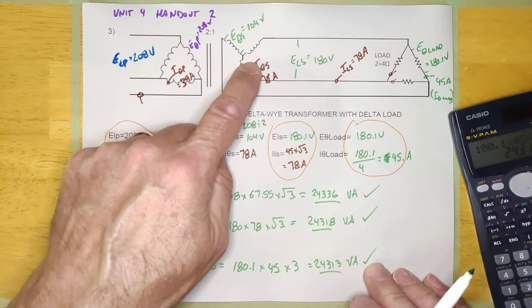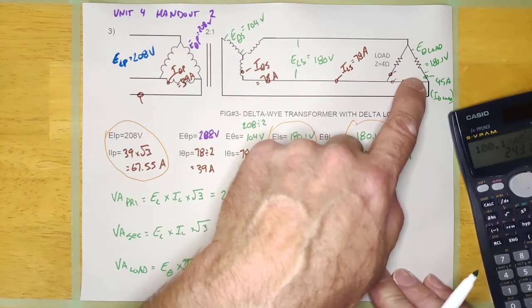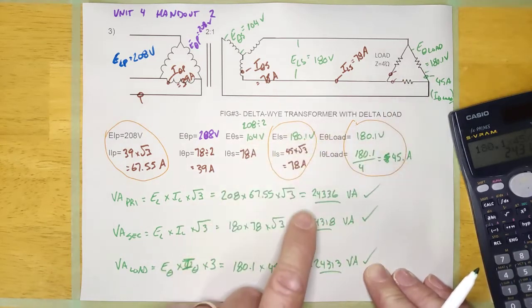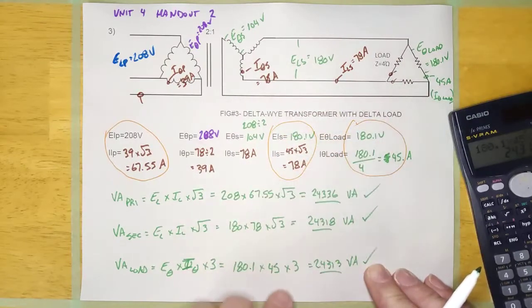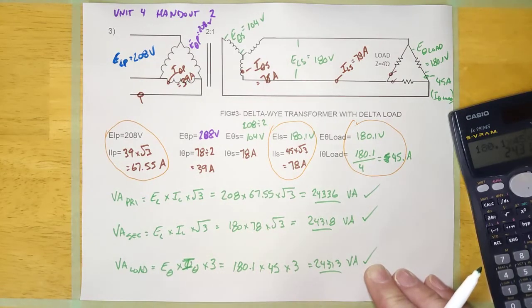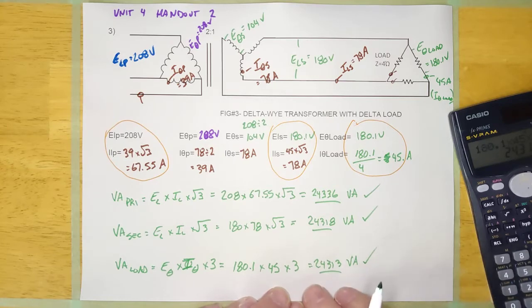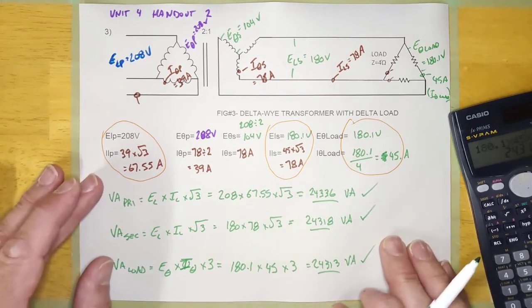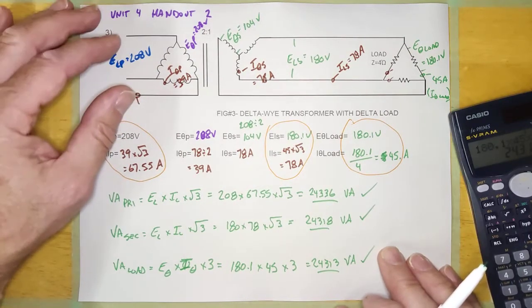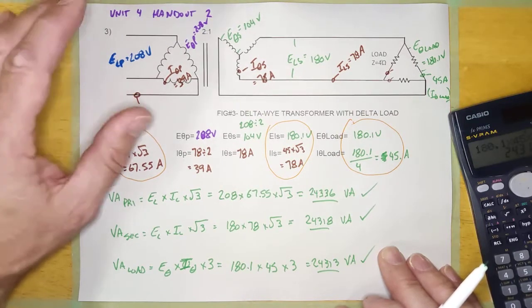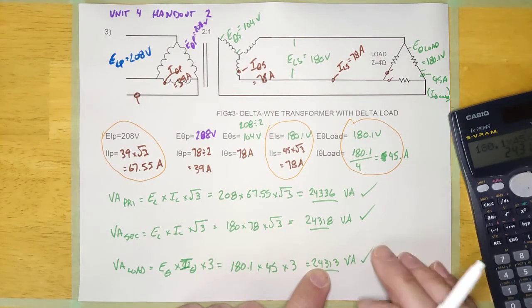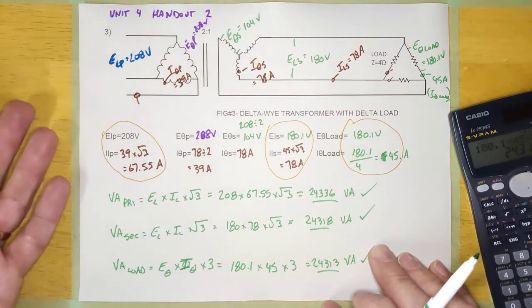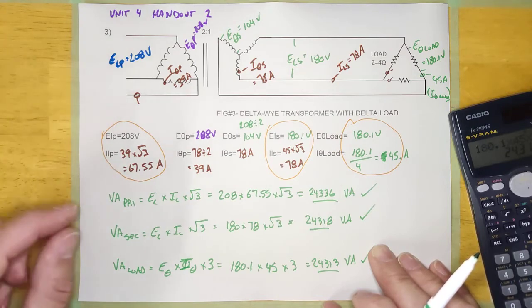The Van Andel way: line values to calculate VA at the primary, line values to calculate VA at the secondary, and phase values to calculate VA at the load. Why not line values at the load? Because the line values coming out of the transformer are the line values going into the load, so you'd just be recalculating the same numbers. By using phase values at the load you're actually checking something different.